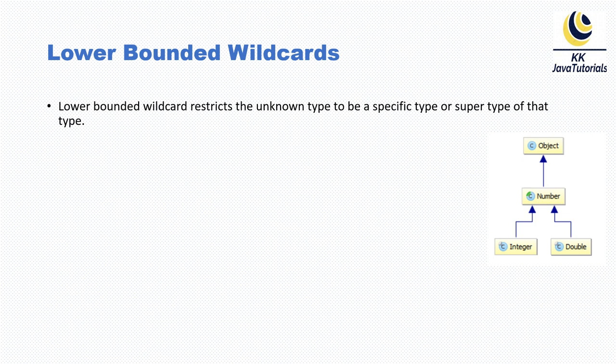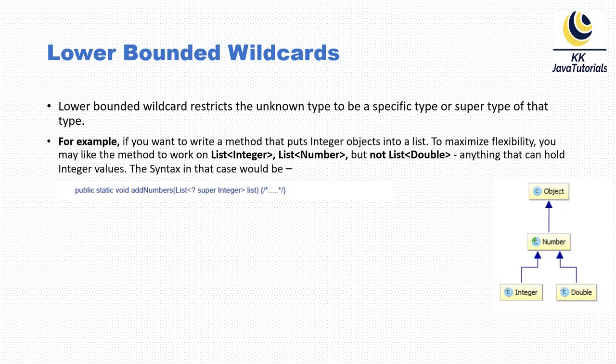Now let's discuss lower bounded wildcards and where we can use them in Java. The lower bounded wildcard restricts the unknown type to be a specific type or a supertype of that type. That's just a definition, so let's try to understand it through an example.